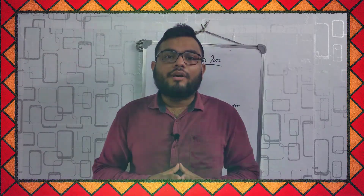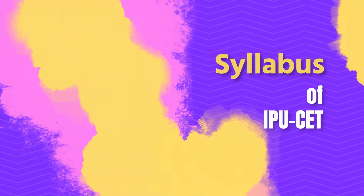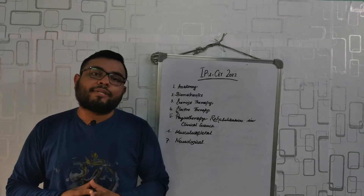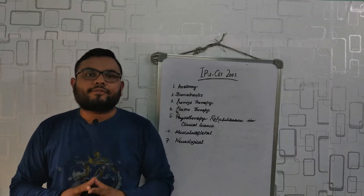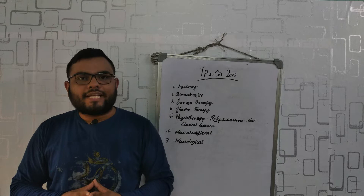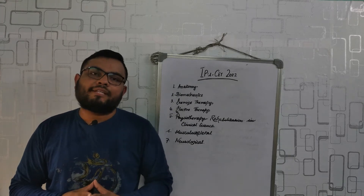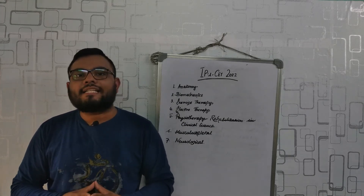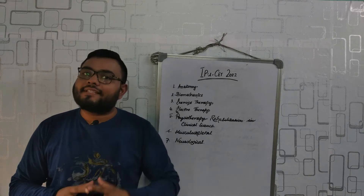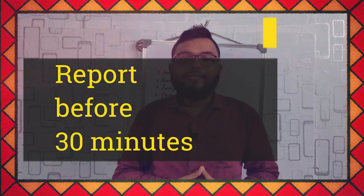The total time for the examination is 150 minutes, that is 1 and a half hours. The syllabus for this entrance test includes: 1st anatomy, 2nd biomechanics, 3rd exercise therapy, 4th electrotherapy, 5th physical rehabilitation in clinical sciences, 6th musculoskeletal, and 7th neurological. The reporting time to the center is 30 minutes earlier than the examination time.